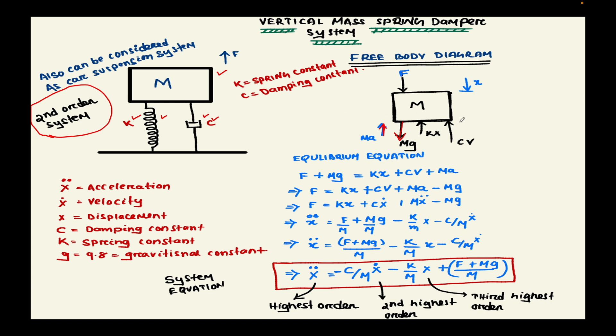Equating all these components we will get F plus mg. mg and F are in the same direction, so we make F plus mg equal to kx plus cv plus ma. This is the equilibrium equation for the system. Here F is the applied force, so we keep this on one side, and then we have kx plus cv plus ma minus mg.